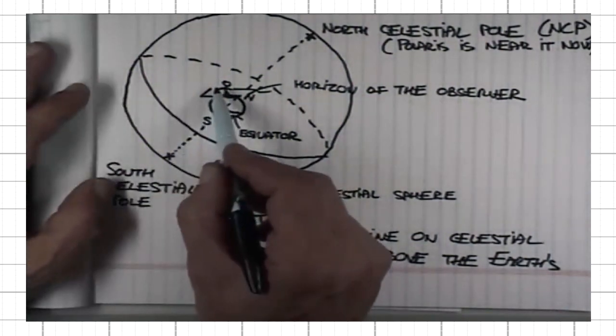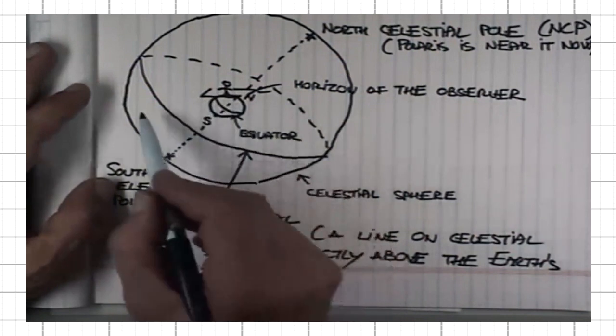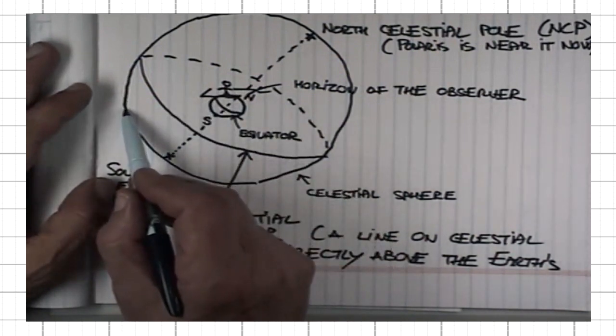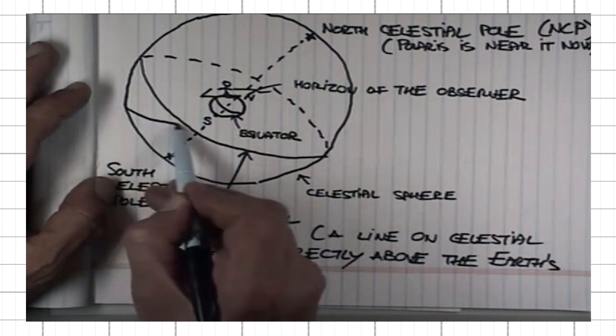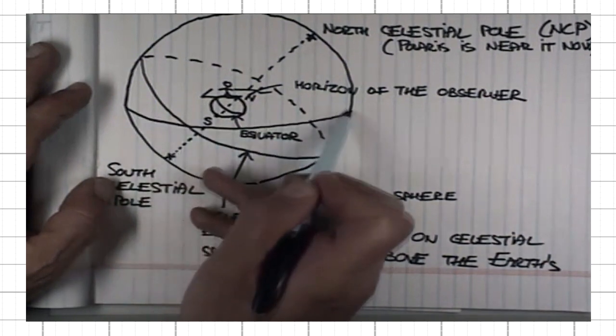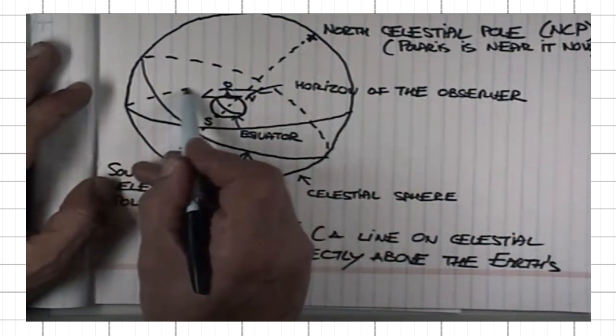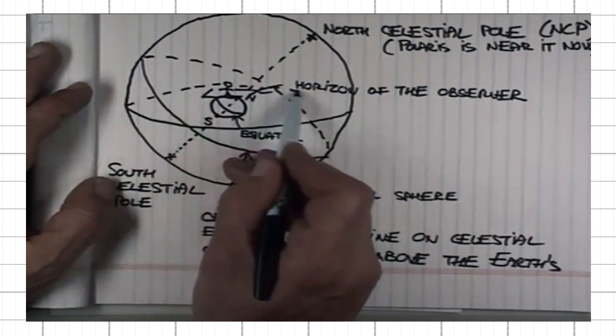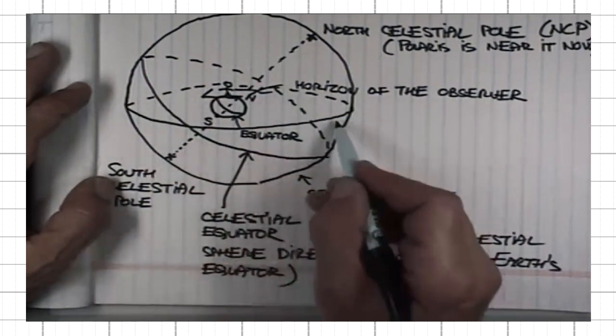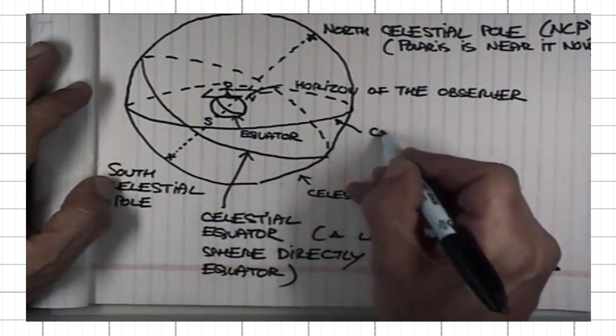If I would extend the plane of the horizon all the way out to celestial sphere, it would make a line on celestial sphere that we call celestial horizon.